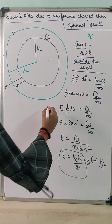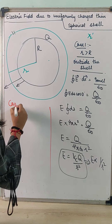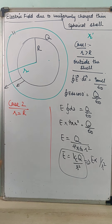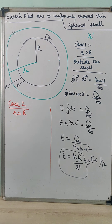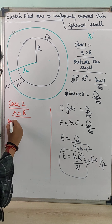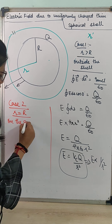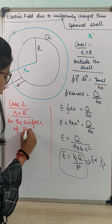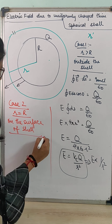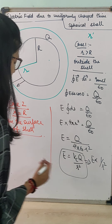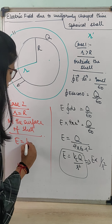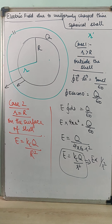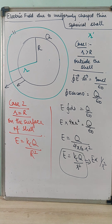The second case is when r equals capital R — that is, the electric field on the surface of the shell. The only change is that E equals Kc capital Q by capital R squared.